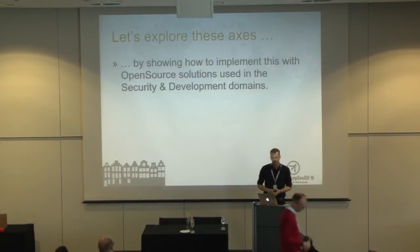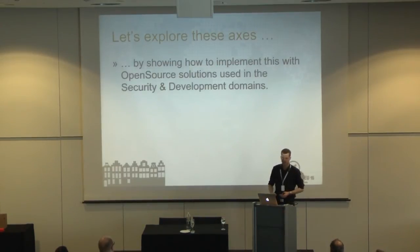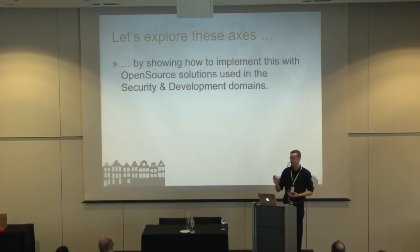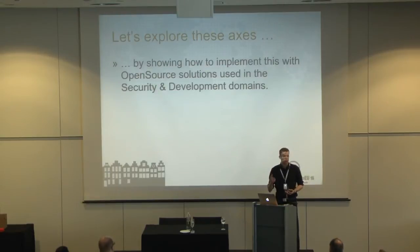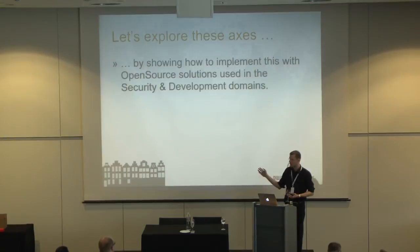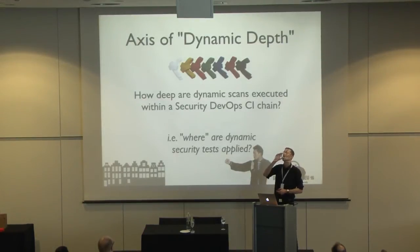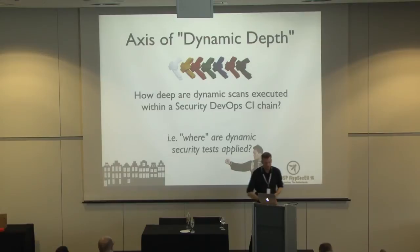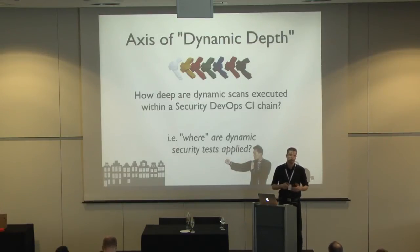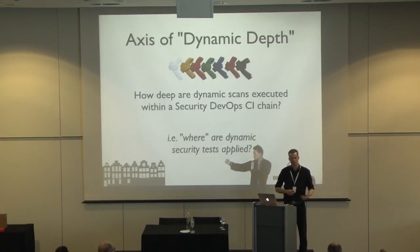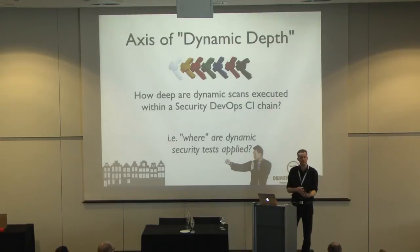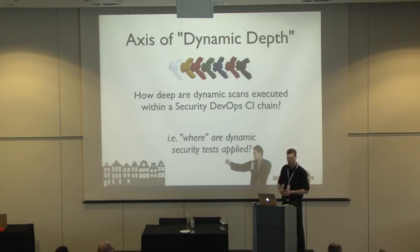Let's explore these two axes by showing how to implement the certain steps with open source security tools — tools we may already be using in our projects but not in an automated fashion. This does not mean commercial tools are not good; there are a lot of good vendors in the exhibition area. It's just to emphasize the 'O' in OWASP and show open source tools. So let's start with the axis of dynamic depth — basically, in a continuous integration system, about where within an application's attack surface dynamic security tests are applied automatically during the build process.